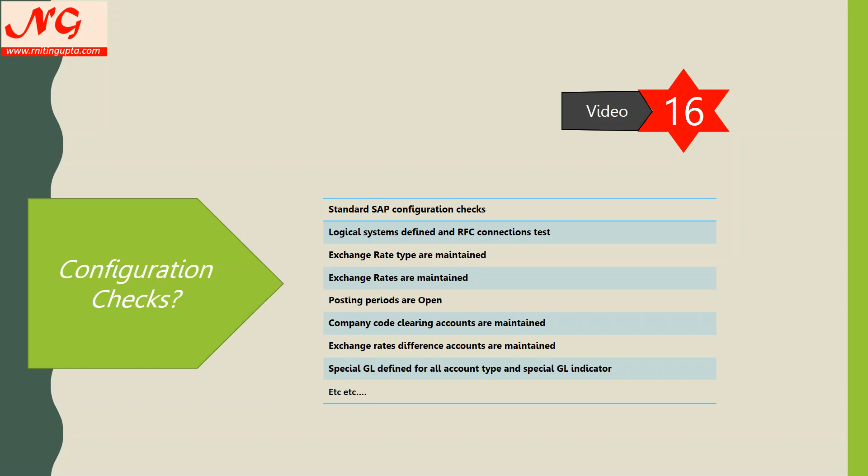Your logical systems and RFC connections should be tested. Exchange rates and exchange rate types are important because you are loading historic data — ensure all exchange rates, both current and all rate types, are loaded. In the source you might use 20 currencies, but all of those must be configured here. Posting periods must be open — very important. Company code clearing accounts should be maintained. In OBCA, exchange rate difference accounts must be maintained (OB08 and OB09). Special GL should be defined for all account types and special GL indicators based on what has been configured in ECC. Apart from that there are several other checks — some custom checks based on your project requirements, like custom tables, enhancements, or specific table entries.